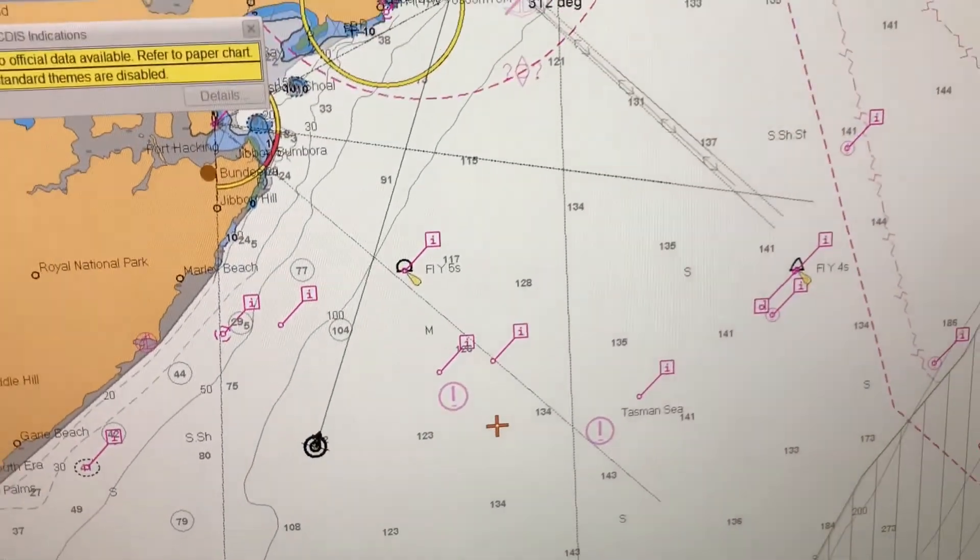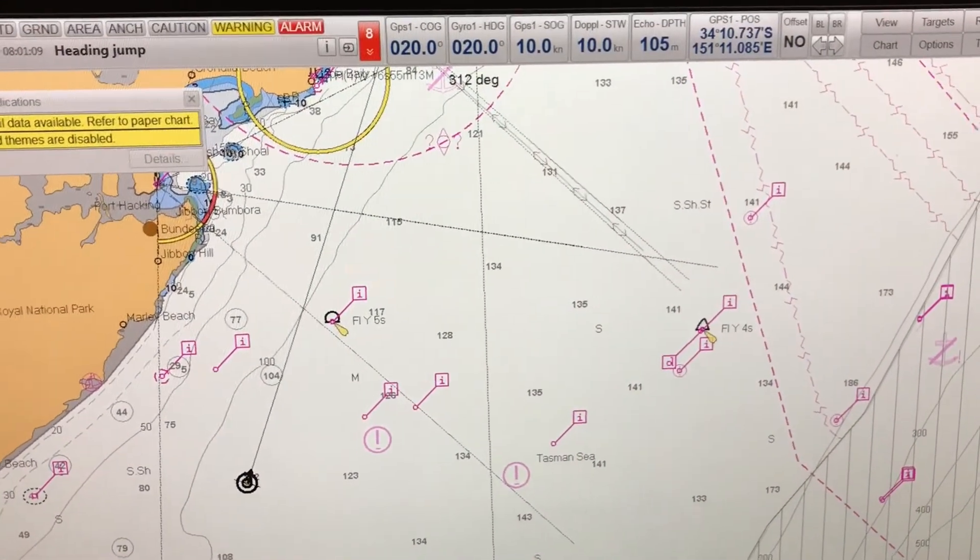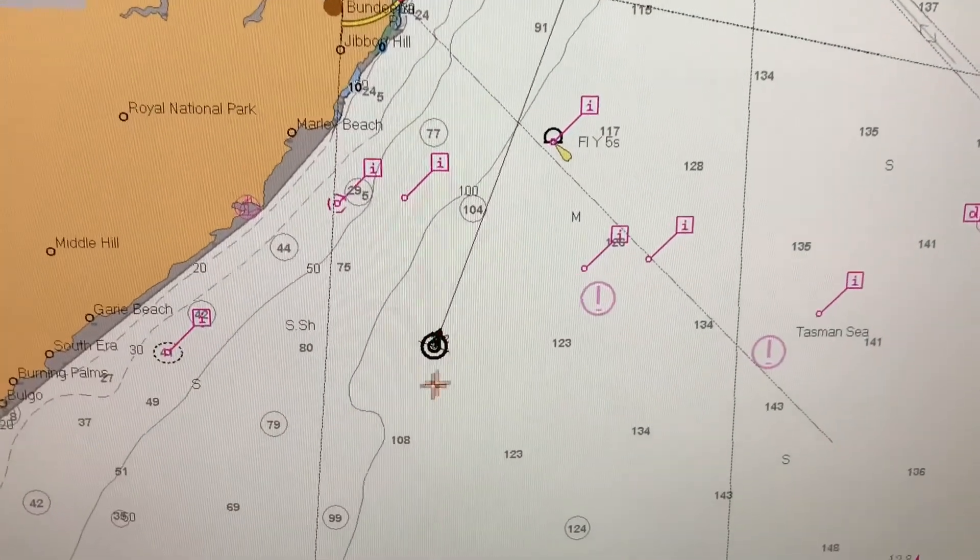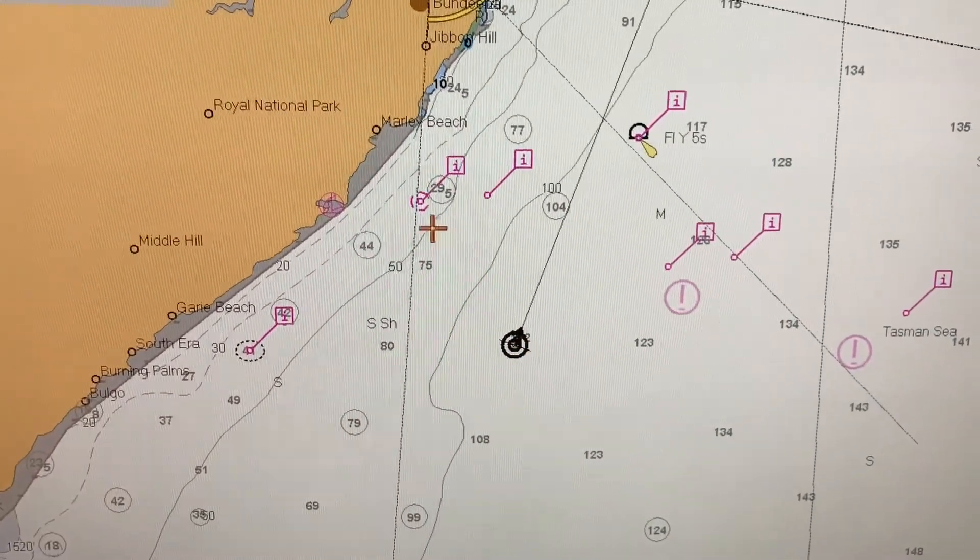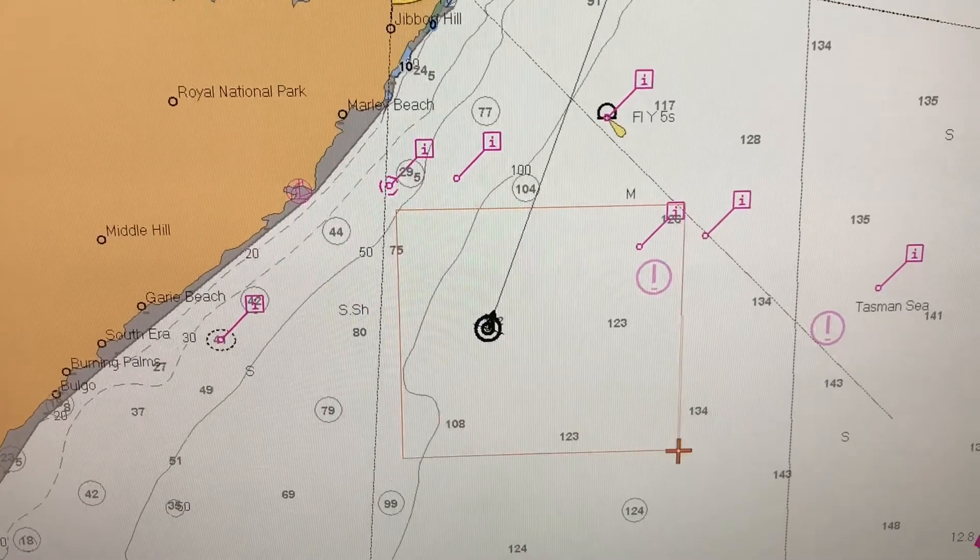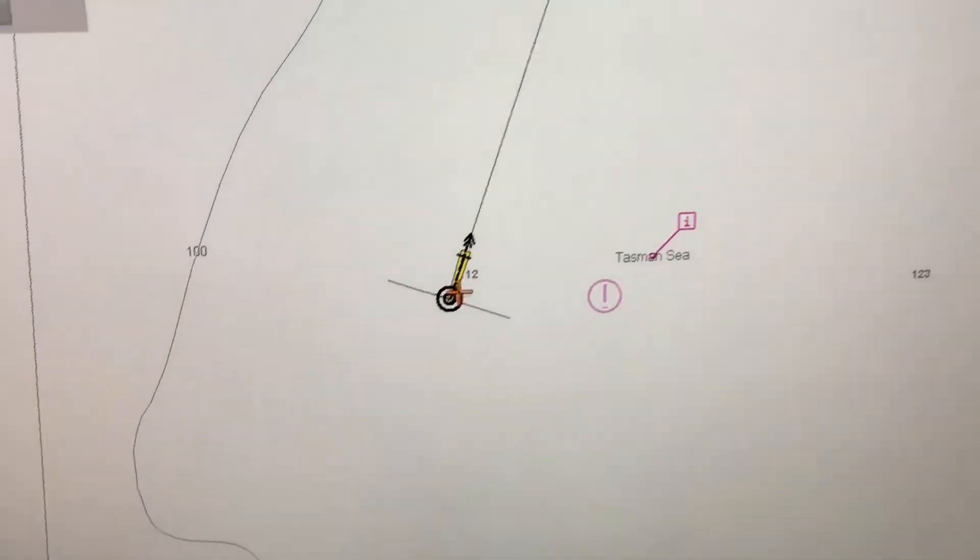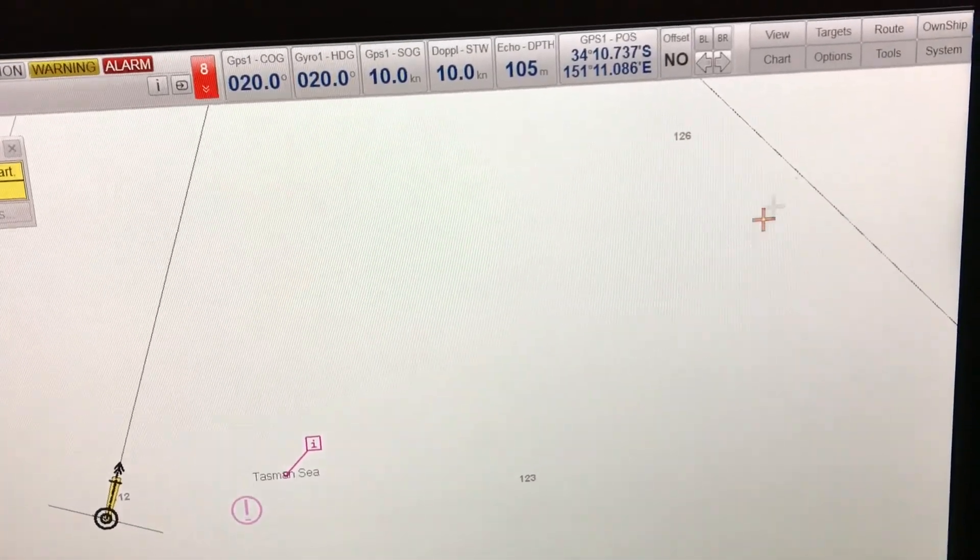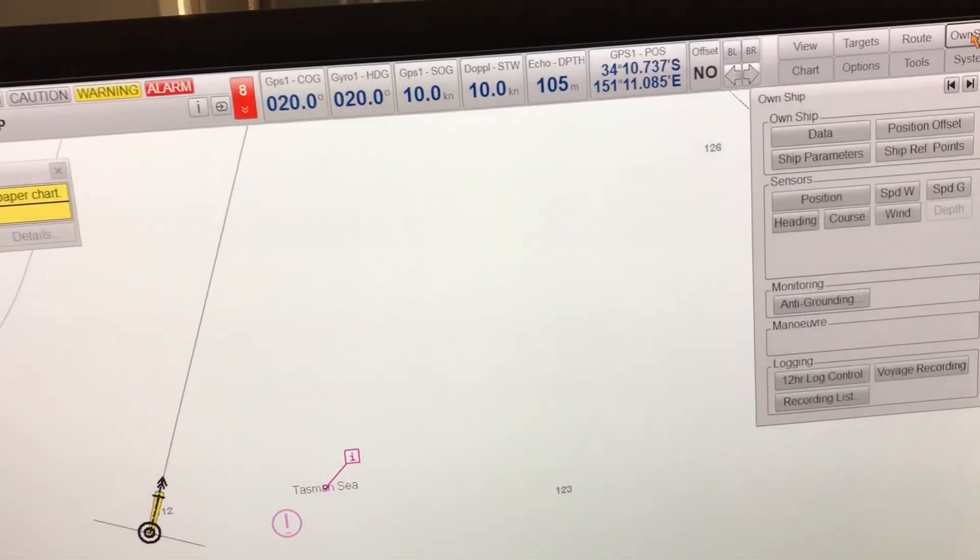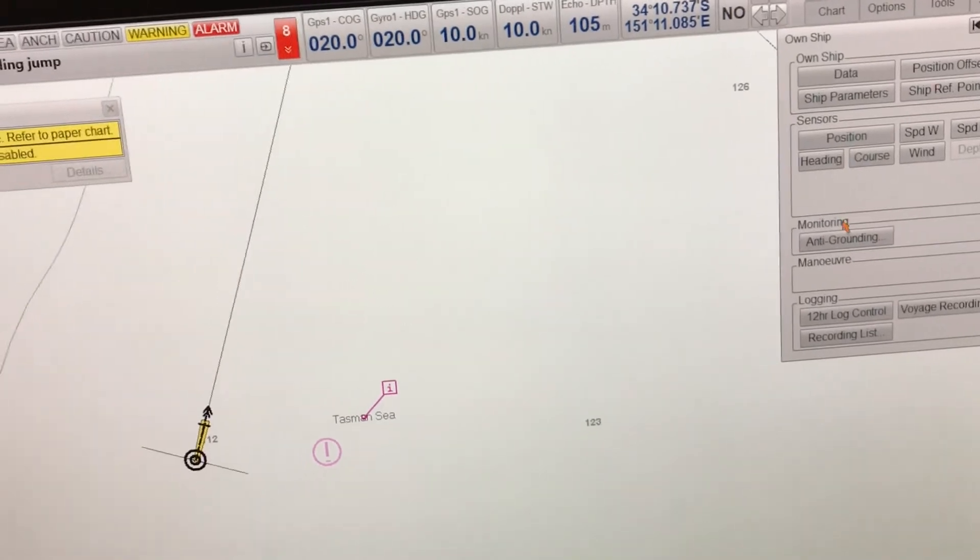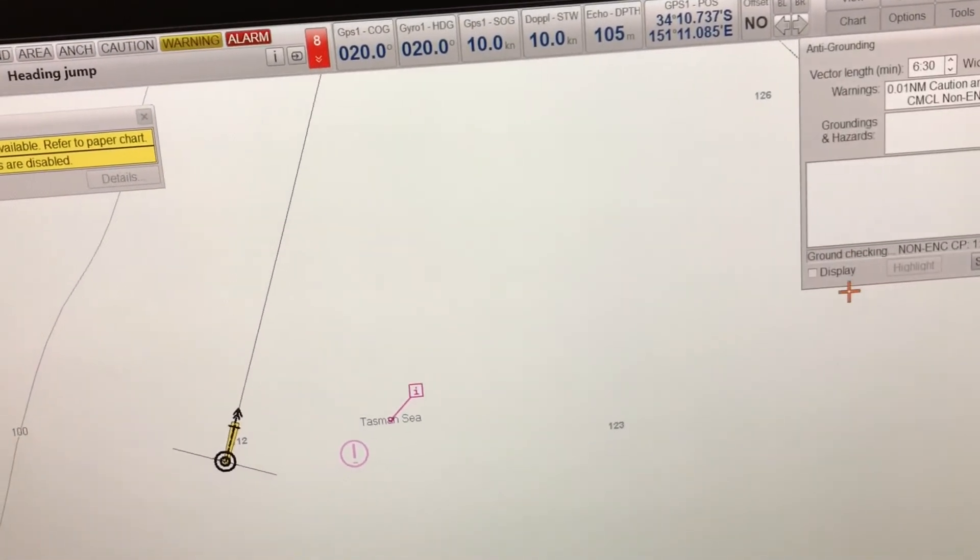So you can see here the two black circles is where the ship is, denoting the position of the ship. I will now use the anti-grounding tool. It is already there, you can see the vector is very small in length, but I will show you how to increase the vector length and the width. Just go to own ship and then you can see under monitoring you can go to anti-grounding.